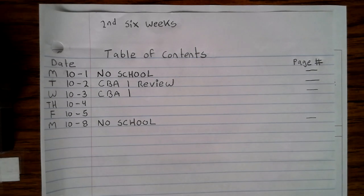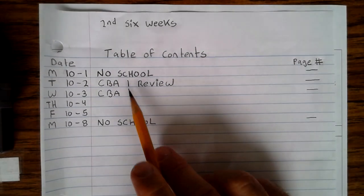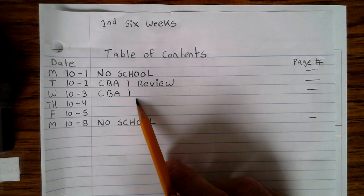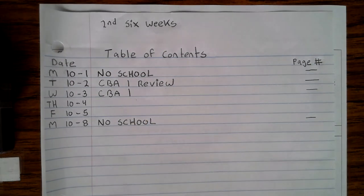Alright, now on your table of contents, you'll see on Monday, October 1st, there'll be no school. On Tuesday, October 2nd, we're going to do the CBA 1 review in class. And then on Wednesday, October 3rd, you'll take the CBA 1.